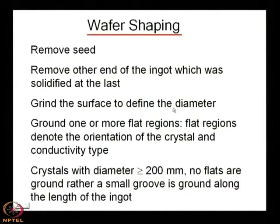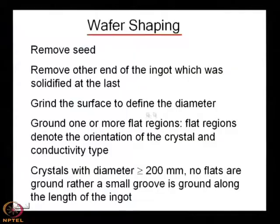Next, grind the surface to define the diameter. If the target is 100 mm but the ingot is slightly less, you standardize it to a defined value — say 95 mm — so that the diameter has a particular specification. It can be 200 or 300 mm as well.